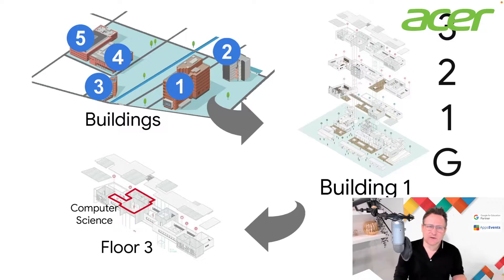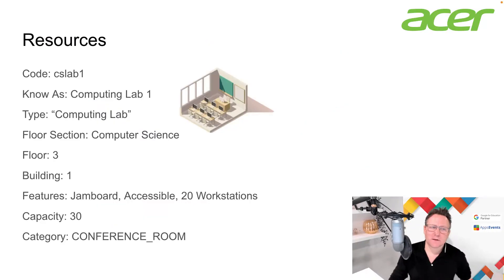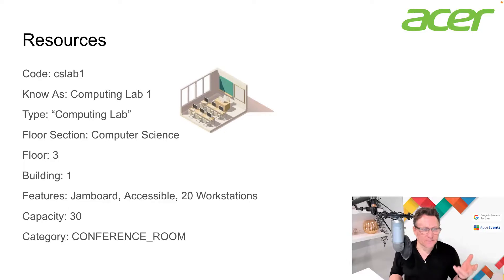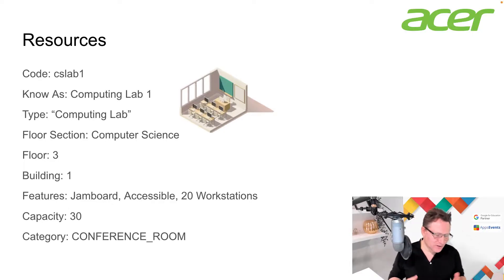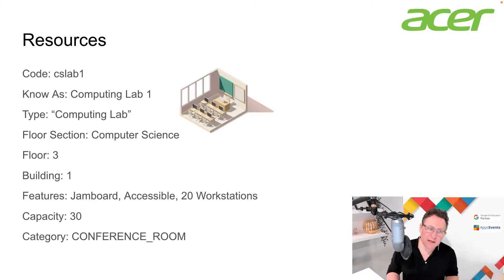Within those areas we will have rooms that you can book — such as conference rooms — or resources that you can book, like a trolley of 30 Chromebooks for example. So let's have a look at how that's structured. I'm going to talk about a particular resource example: a computing science lab, and I'm going to give it a code as its ID.